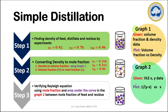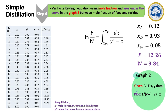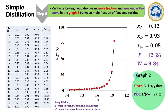Steps 1 and 2 are now completed. Moving on to step 3: to verify the Rayleigh equation. The Rayleigh equation relates the total number of moles in the feed and residue with the mole fraction of solute in the feed and residue and the vapor-liquid equilibrium data. The VLE data for the acetone-water mixture is given. To find the right-hand side of the equation, we have to plot a graph between x and 1/(y* − x), where x is the mole fraction of acetone in the liquid phase and y* is the mole fraction of acetone in the vapor phase. We then find the area under the curve between XF and XW.